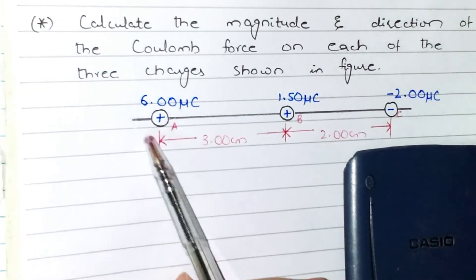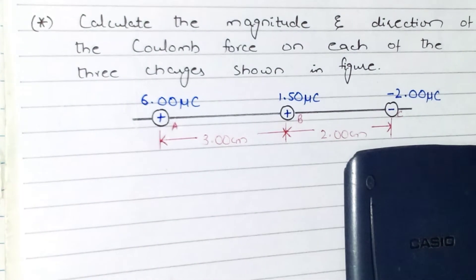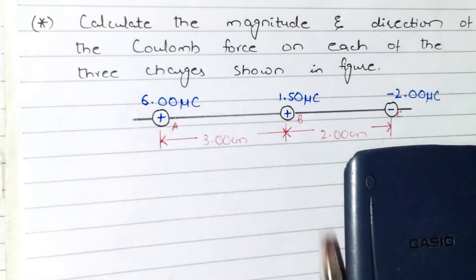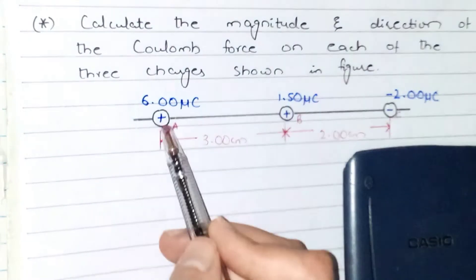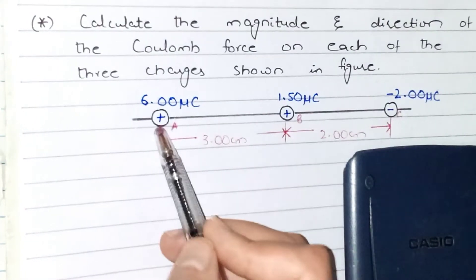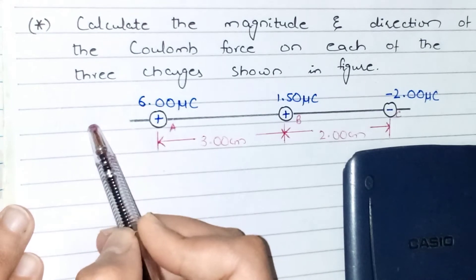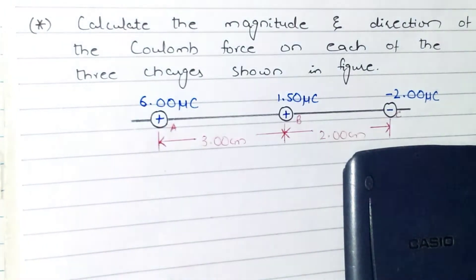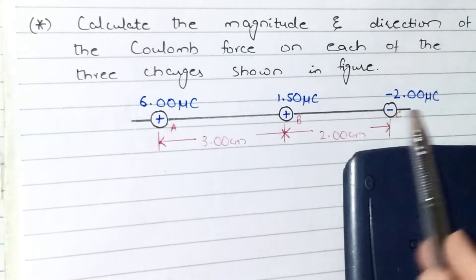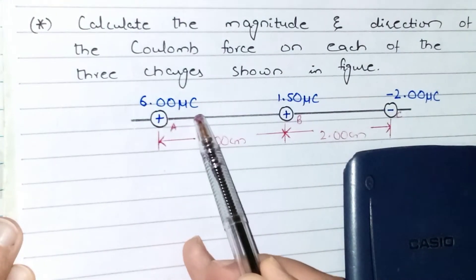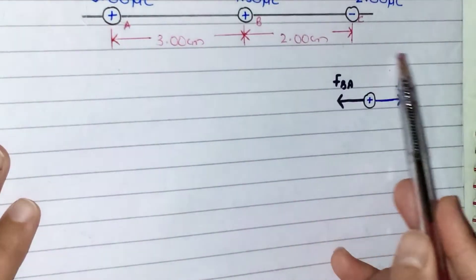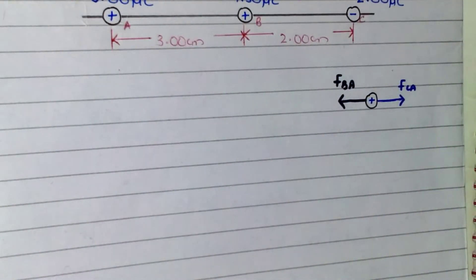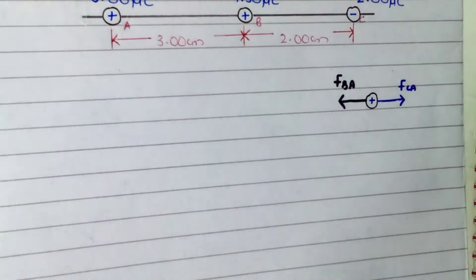To find the magnitude and direction of the force on charge A, we make a free body diagram. There are two forces acting on charge A: charge B will repel charge A because both are positive, so the force is directed away. Charge C, being negatively charged, will attract charge A towards itself, so the force from C is directed the other way. This gives us the free body diagram for charge A.